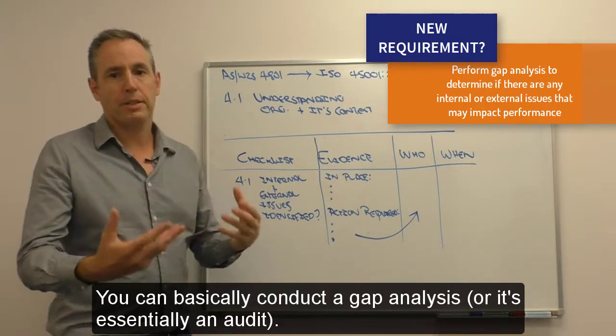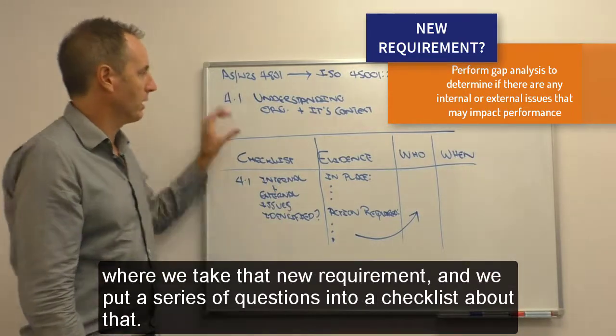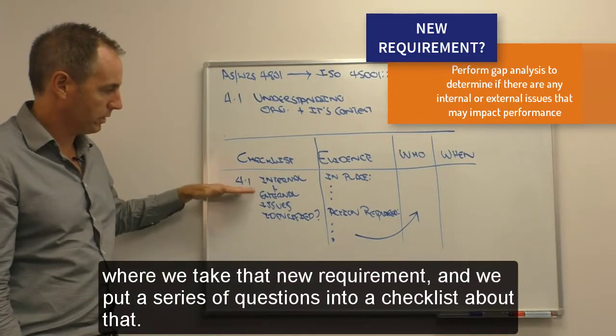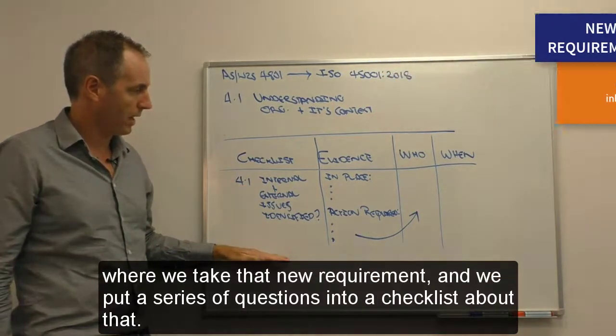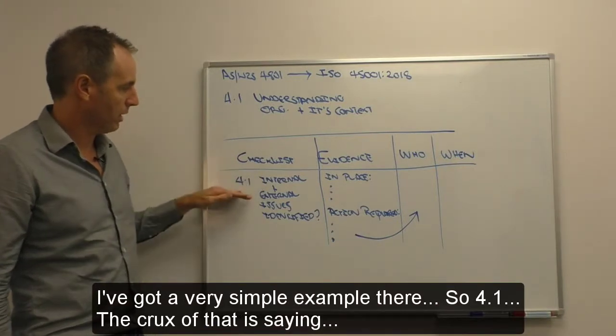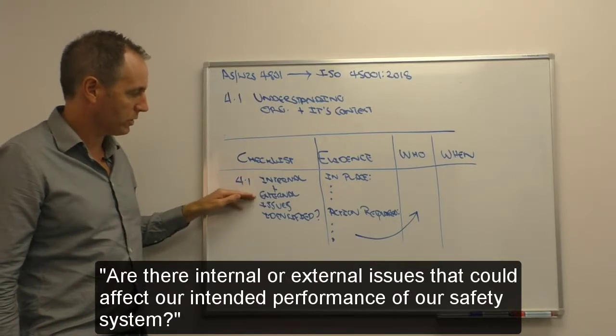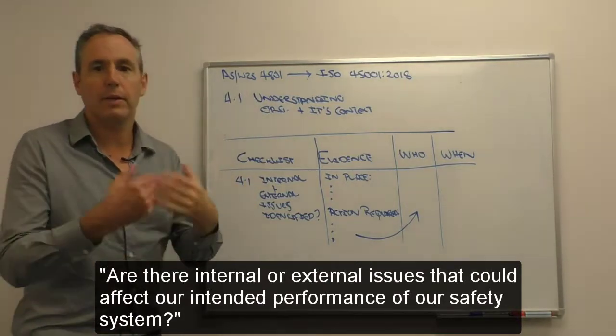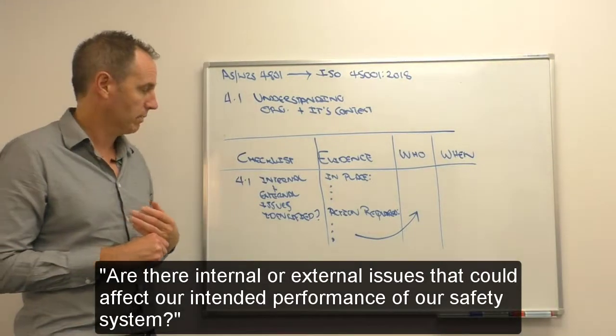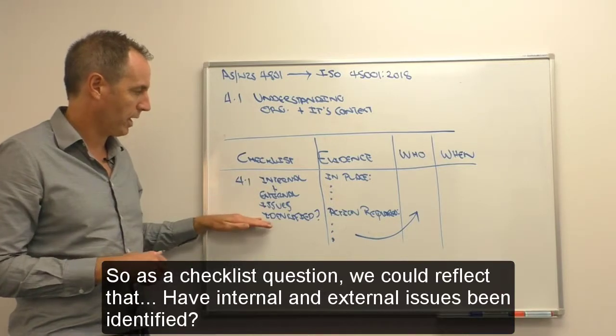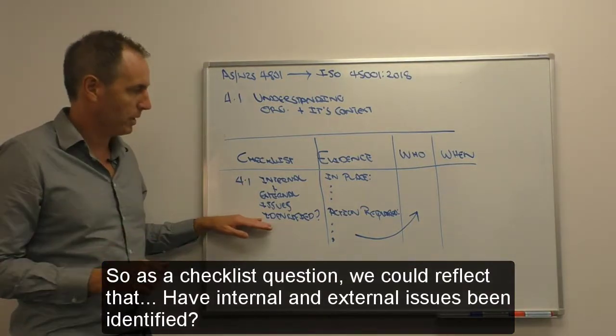You can basically conduct a gap analysis, or it's essentially an audit where we take that new requirement and put a series of questions into a checklist about that. I've got a very simple example there. So 4.1, the crux of that is saying, are there internal or external issues that could affect our intended performance of our safety system? As a checklist question, we could reflect that: have internal and external issues been identified?